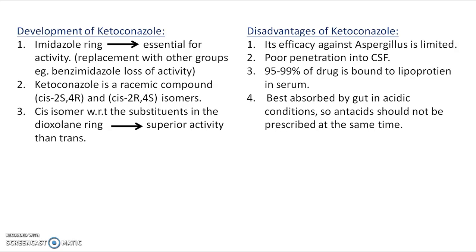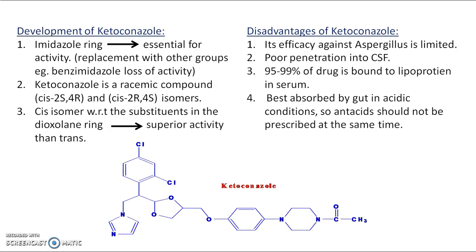The developmental aspects of ketoconazole: the imidazole ring is essential for activity; replacing it with benzimidazole results in loss of activity. Ketoconazole is a racemic compound that exists as cis-2S4R and cis-2R4S isomers. The cis isomer with respect to substituents in the dioxolane ring has superior activity over the trans. Disadvantages include limited efficacy against aspergillus, poor penetration into cerebrospinal fluid, 95–99% binding to lipoprotein in serum, and best absorption under acidic gut conditions — so antacids should not be prescribed concurrently.